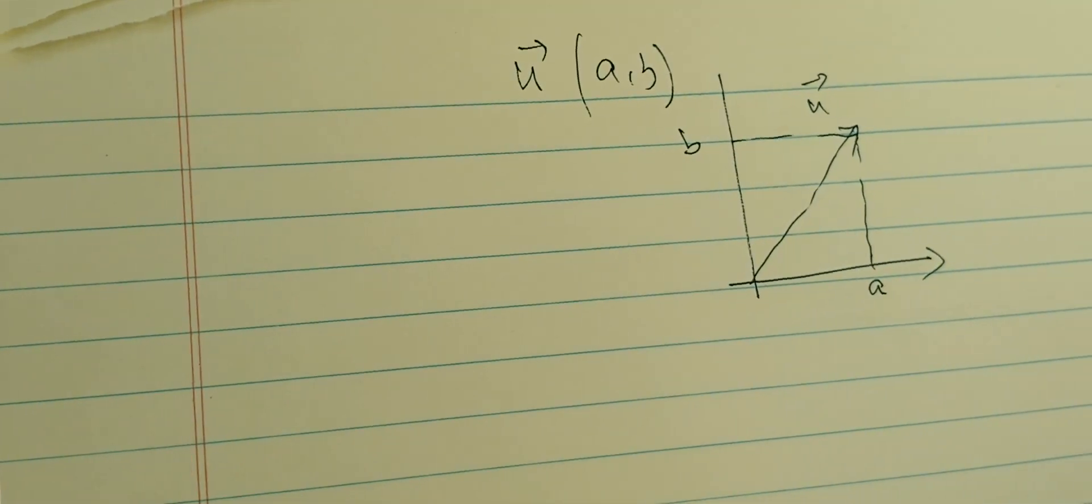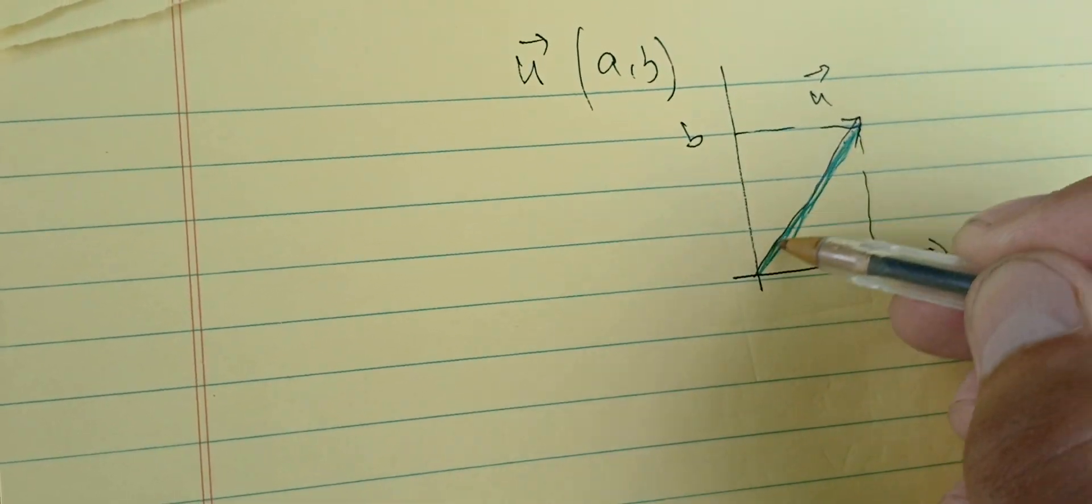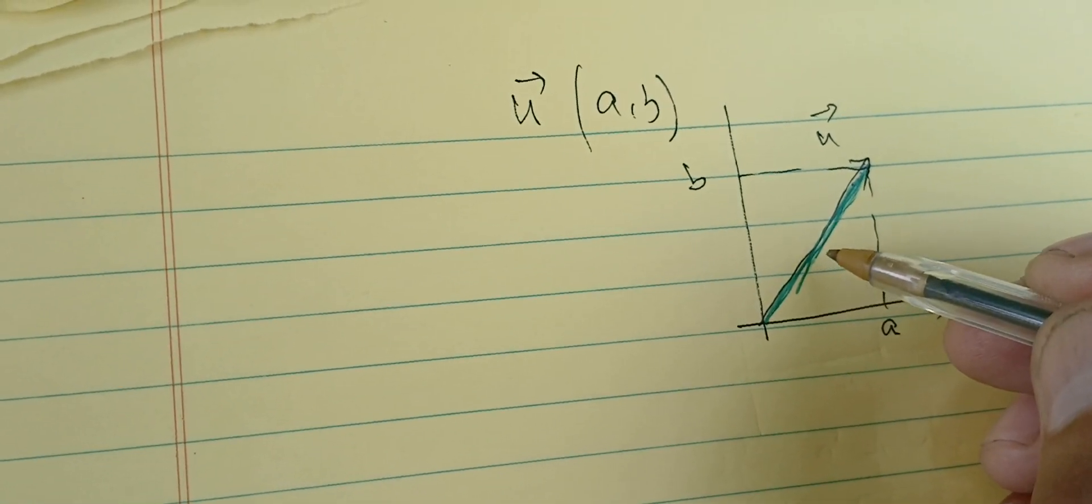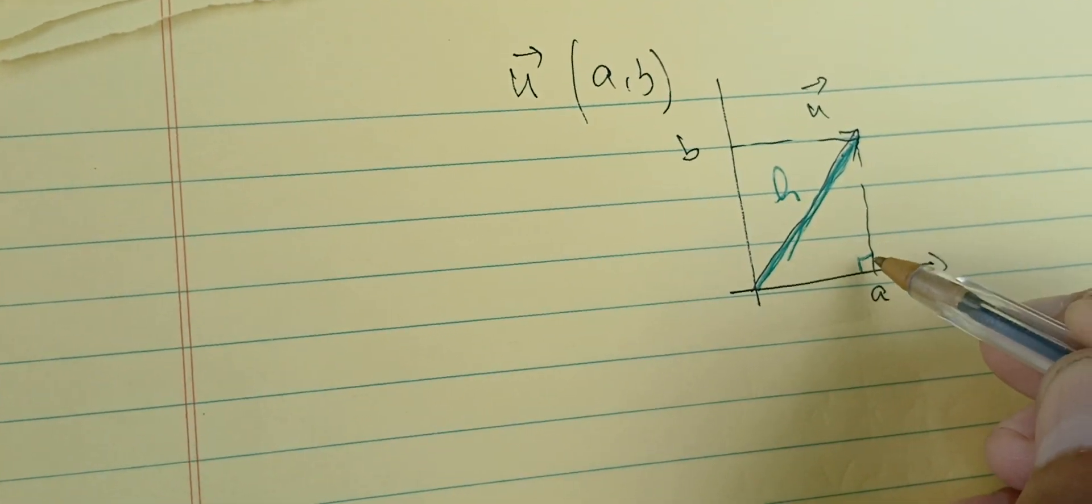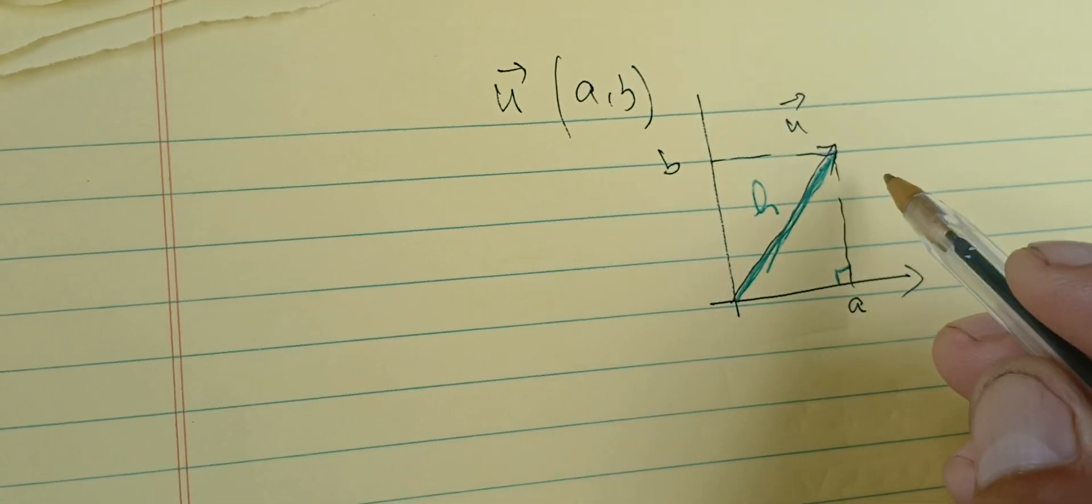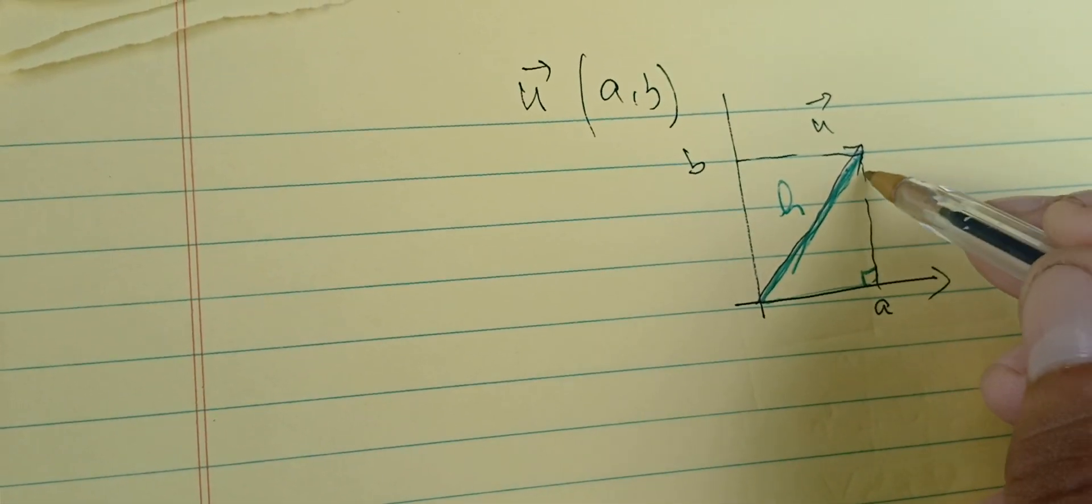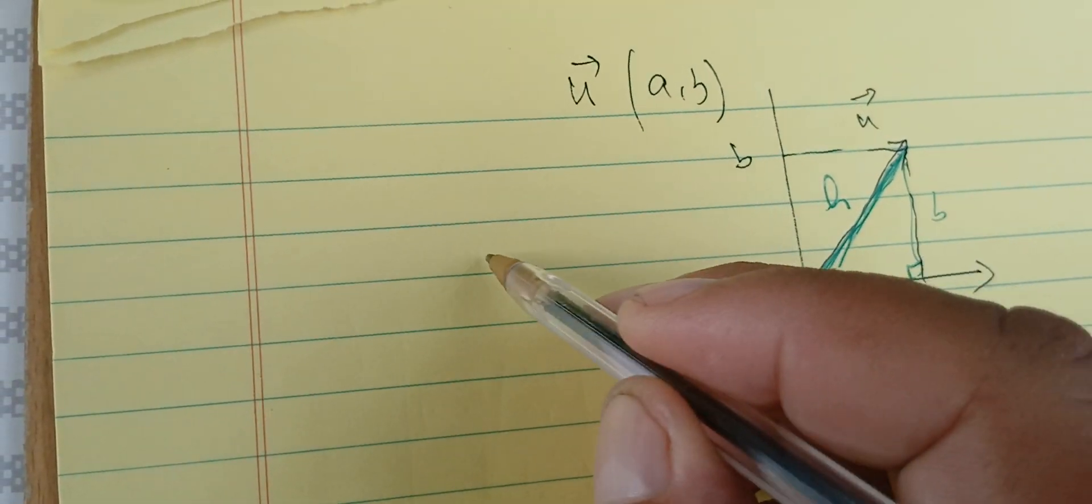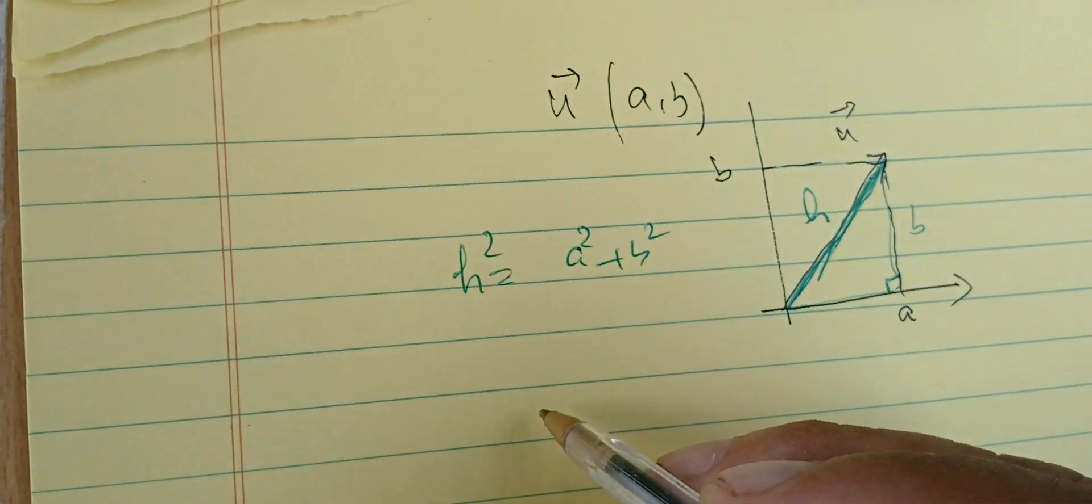If I call the length h, I have a 90-degree angle here, and I can use the Pythagorean theorem. This is a and this is b, therefore h² = a² + b². So if I want to find h, I take the square root of a² + b².